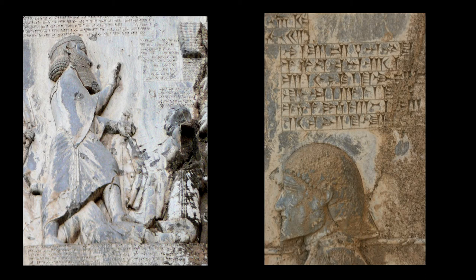Sections 60–62: "King Darius says: Now let what has been done by me convince you. For the sake of the people, do not conceal it. If you do not conceal this edict but publish it to the world, then may Ahura Mazda be your friend, may your family be numerous, and may you live long. If you conceal this edict and do not publish it to the world, may Ahura Mazda slay you and may your house cease. This is what I have done in one single year; by the grace of Ahura Mazda have I always acted. Ahura Mazda brought me help, and the other gods, all that there are."